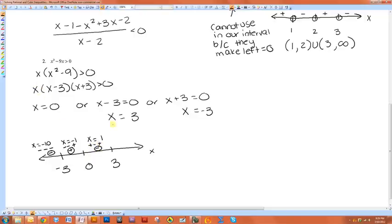And if I try a positive number greater than 3, like x equals 10, I'm going to get a positive, a positive, and a positive. So all of these are positive here. So we're looking for the intervals in which it was greater than zero. So that would be in here and in here. So it'll be from negative 3 to zero, union 3, positive infinity.